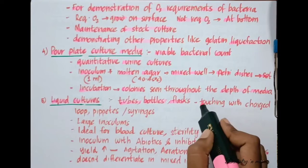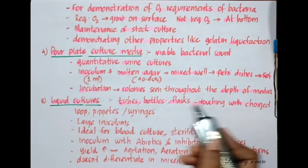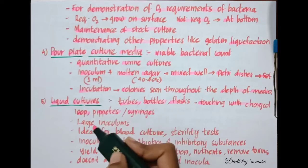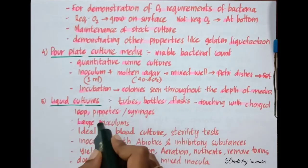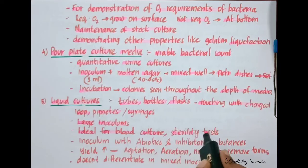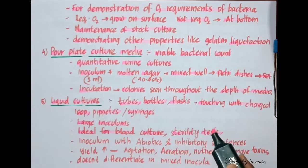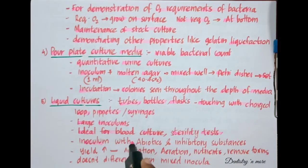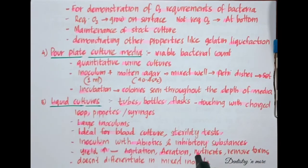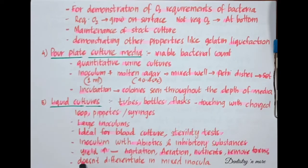The next culture method is liquid cultures. Tubes, bottles, or flasks may be inoculated by touching with a charged loop, pipettes, or syringe. Large inocula can be inoculated into liquid culture media. Liquid culture media are ideal for blood culture and sterility tests, and are preferable for inocula containing antibiotics and inhibitory substances. The yield can be enhanced by agitation, aeration, addition of nutrients, and removal of toxic metabolites. The major disadvantage is that liquid culture does not differentiate mixed inocula.